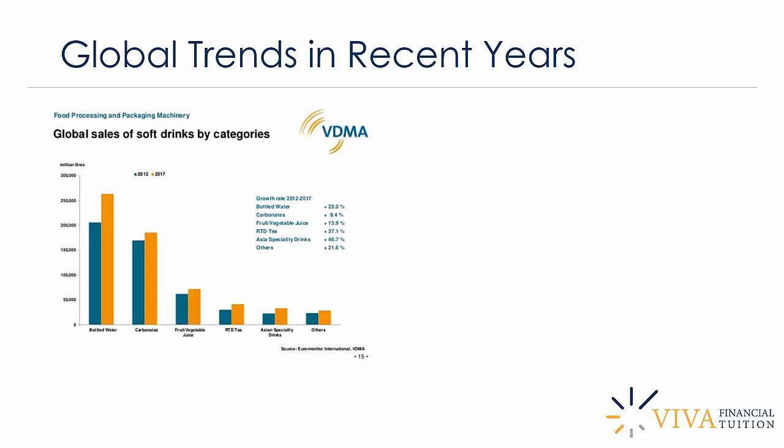Let's look at some global trends from 2012 to 2017. In terms of growth, carbonates are at a very modest 9.4%, while bottled water is at 28%. It's important to bear in mind that carbonated soft drinks may show relatively modest growth because this is possibly the most mature market and the largest in absolute consumption numbers. But there are big changes on the horizon for the carbonated soft drink segment, and it's important to keep an eye on other categories showing very impressive growth.